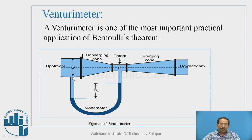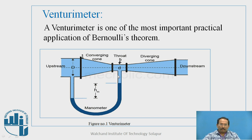Here we can clearly observe that the velocity at the inlet is different from the velocity at the throat. You can see the level of the manometric liquid going up from the datum level. Section 1 is the inlet and section 2 is the throat section. As we already studied in Bernoulli's theorem, reducing the diameter of the pipe increases velocity and decreases pressure — the same principle applies here.